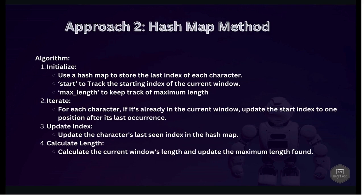Approach two: the hash map method. We use a hash map to store the last seen index of each character and a variable called 'start' to track the starting index of the current window. We also use a variable 'max_length' to keep track of the maximum substring length without repeating characters. For each character in the string, if it is already in the current window we update the start index to one position after its last occurrence. We then update the character's last seen index in the hash map and calculate the current window length to update max_length if needed.